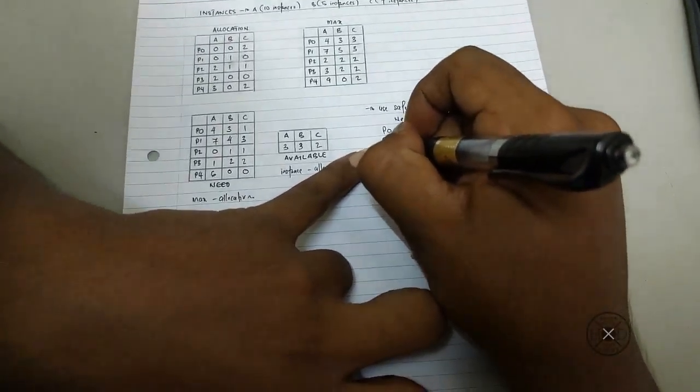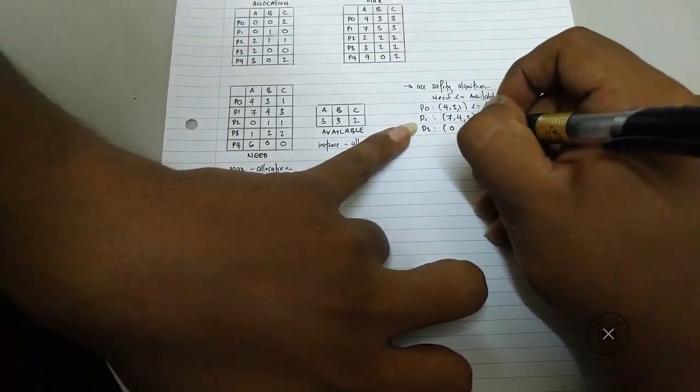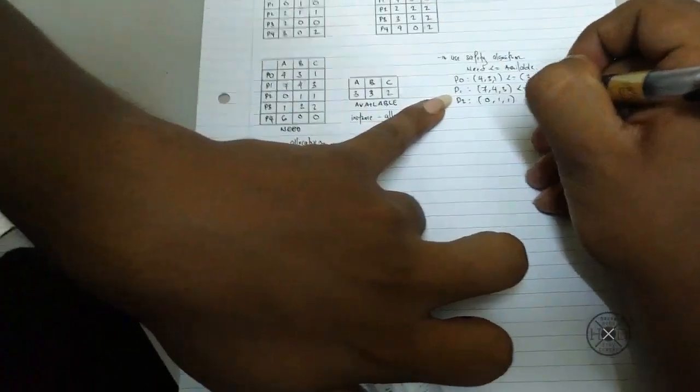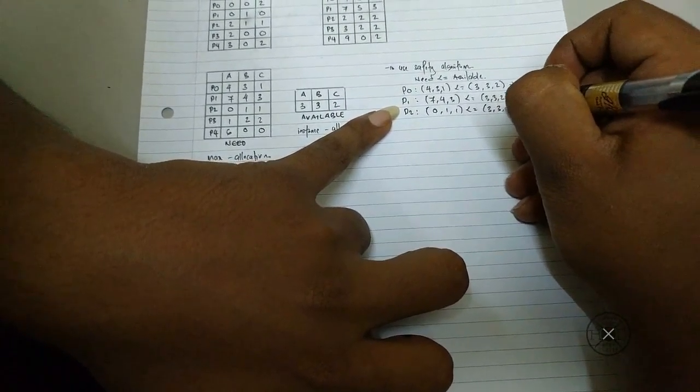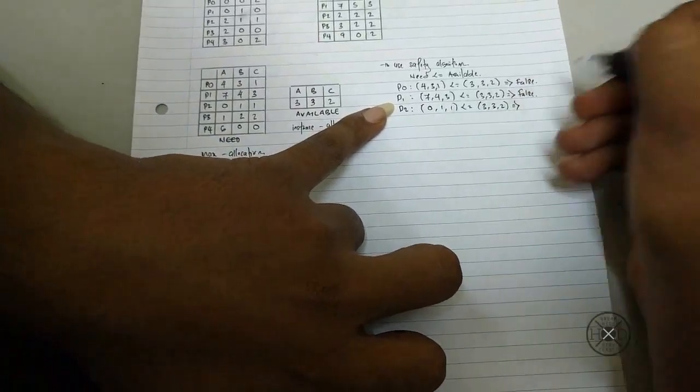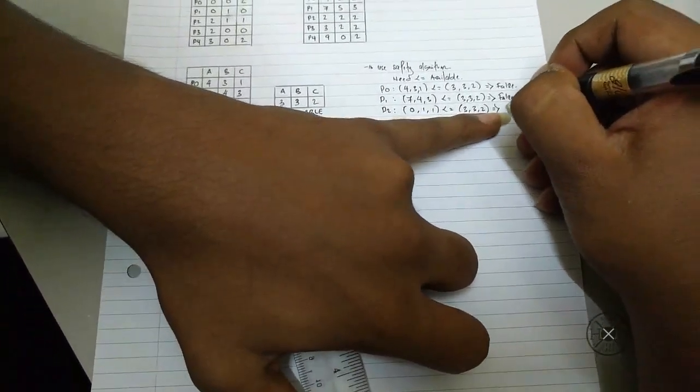And for process 2 is 0, 1, 1 less than equal 3, 3, 2. As you see, the need is lesser than the available, so it is true.